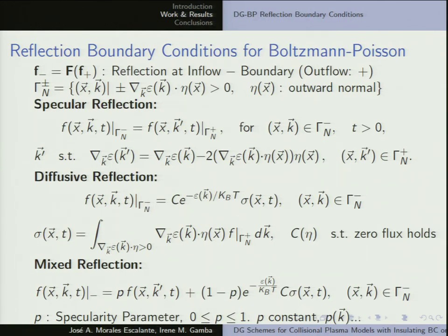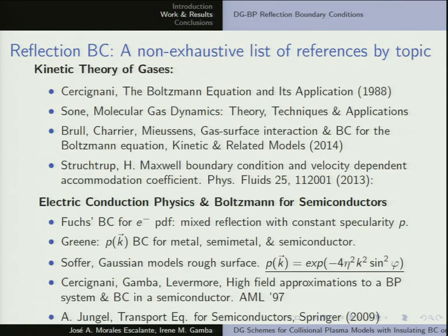The mixed reflection is a convex combination of specularity and diffusivity. It can have a non-constant parameter — we present results with a model where the probability depends on K. This kind of condition is well studied in kinetic theory of gases. Chiriciano studies reflection boundary conditions in diffusive and specular. There's also a recent paper studying gas-surface interaction, and a following paper by Stroosh Troop studying the same problem. Mathematically, they study different kinds of boundary conditions like diffusivity and isotropic scattering, working with the kernels of the collision operator.